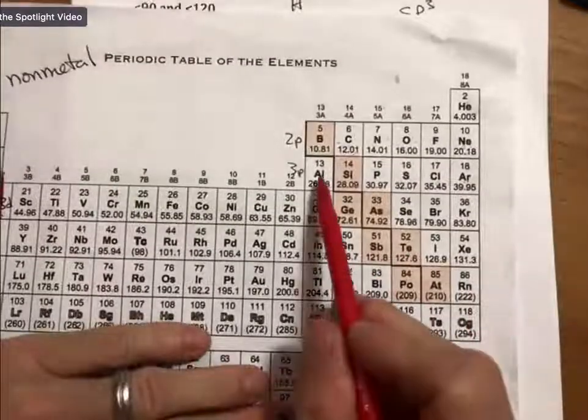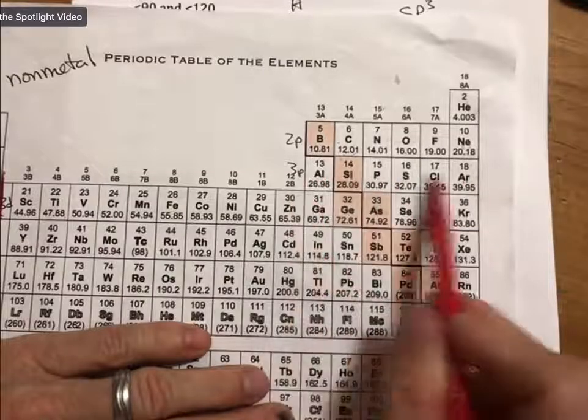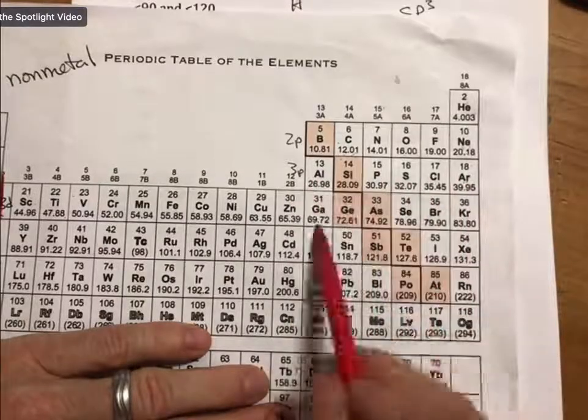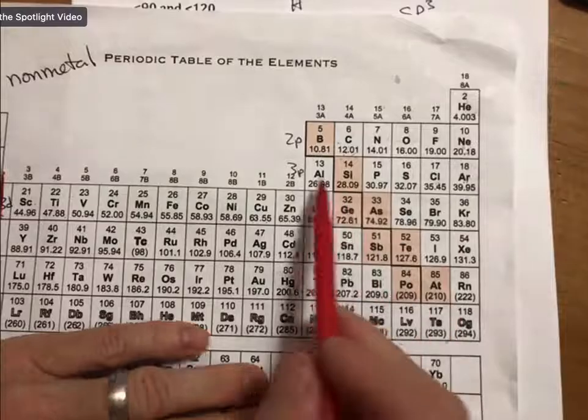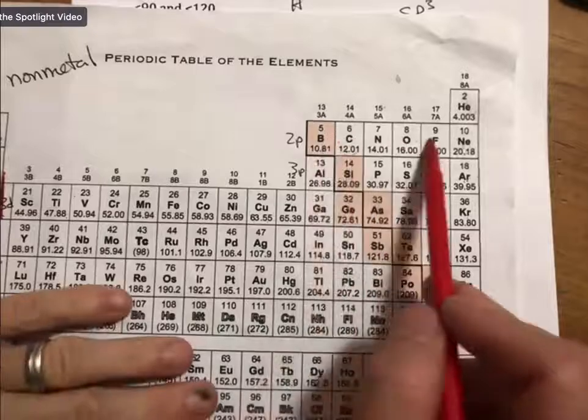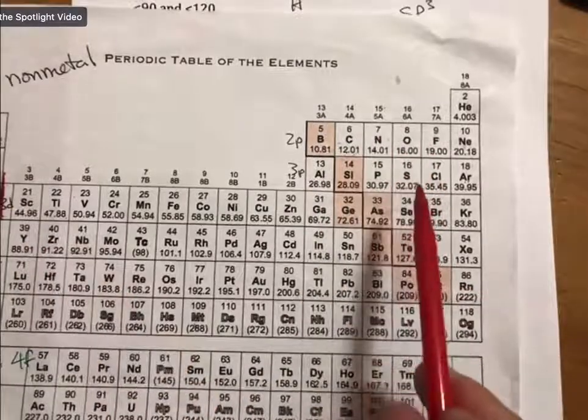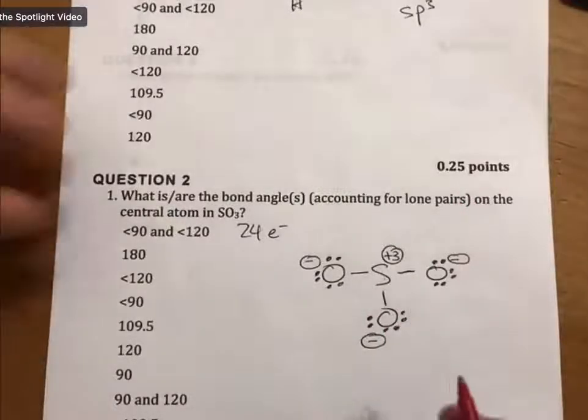Our tool bag then says check can we do an expanded octet. As a reminder, if you're between aluminum and argon in the 3p area and anywhere below it, yes you can do an expanded octet. If you're in the 2p region, you cannot. So sulfur is definitely capable of doing an expanded octet.